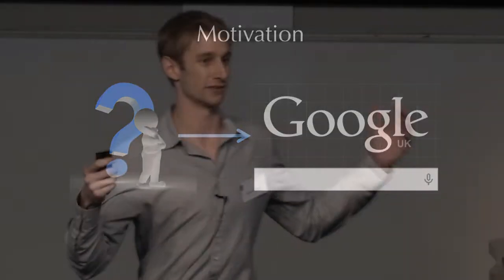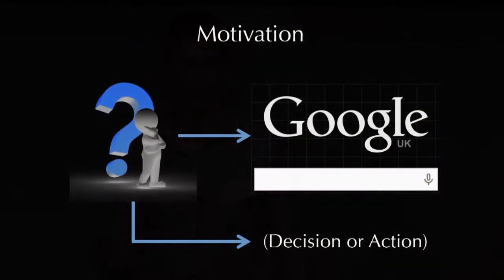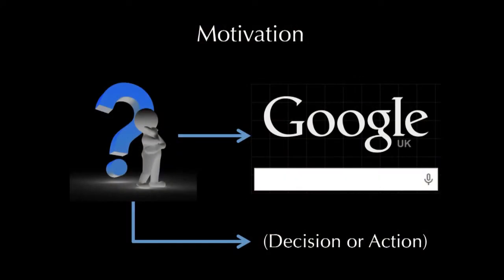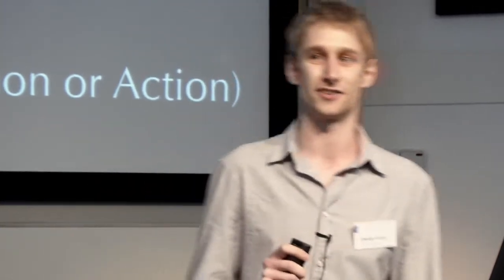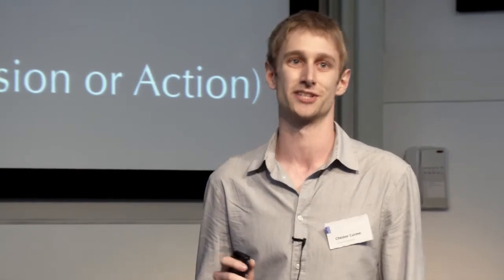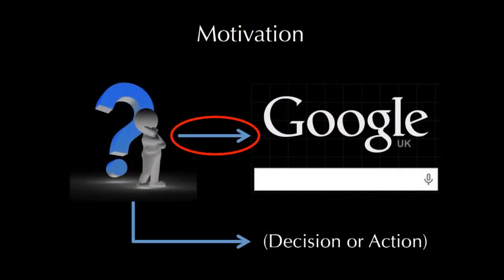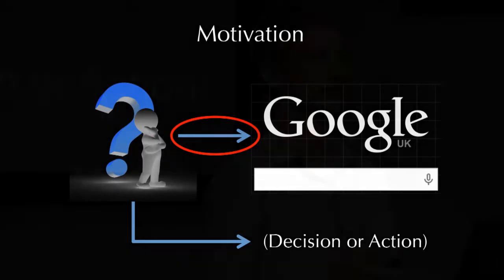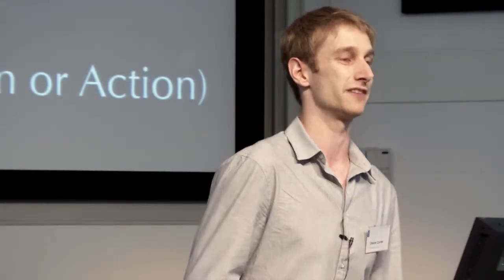Suppose you're wondering if you should come to some conference that you've heard about. You enter in some queries, find some information, and based on that information you proceed with some action or decision — like you all coming to the conference. The interesting question that has emerged in recent years is whether we can use search data to get a handle on this information-gathering stage, and whether we can use these signals to anticipate events in the real world.